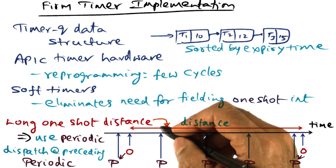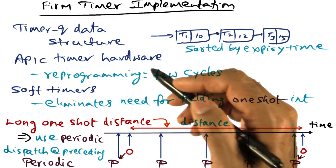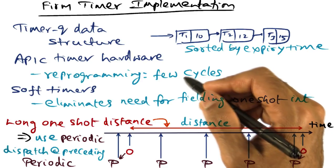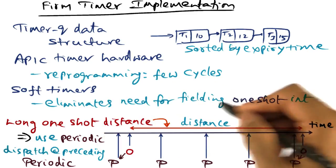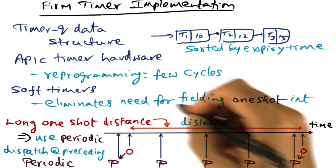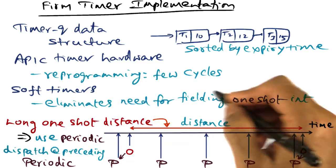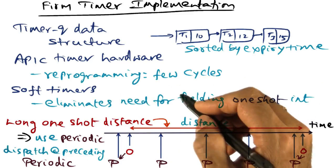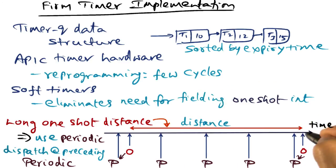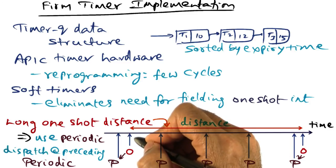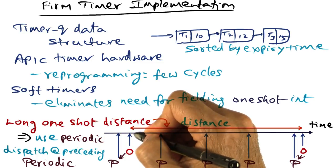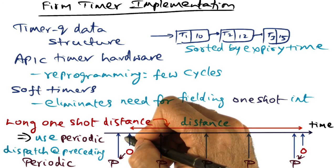To summarize the firm timer implementation: first, the APIC hardware allows reprogramming one-shot timers in few cycles. Secondly, by choosing the appropriate overshoot distance, we can eliminate the need for fielding one-shot timer interrupts if soft timers go off within that overshoot period. And third, if the distance between one-shot timers is really long, then instead of using one-shot timers, we will simply use periodic timers and dispatch the one-shot event at the preceding periodic timer event.